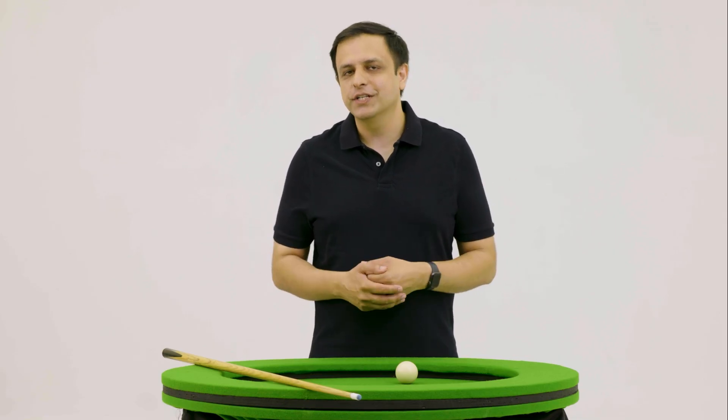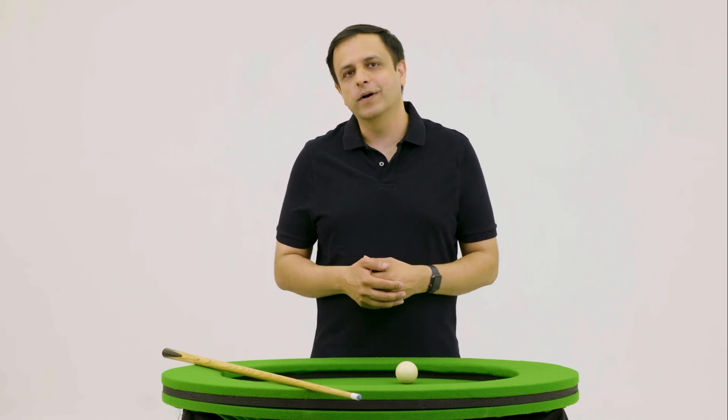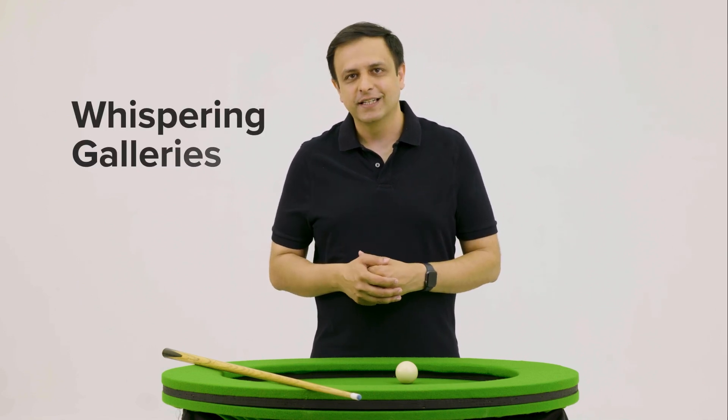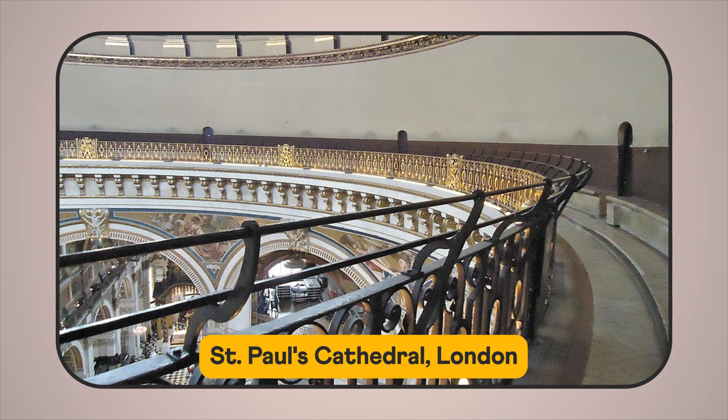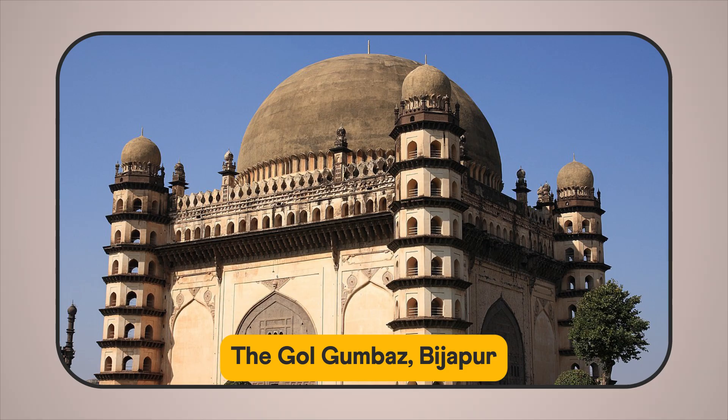Another interesting application of an ellipse's reflective property are the whispering galleries, present worldwide in locations like the Grand Central Station in New York, St. Paul's Cathedral in London, and the Gol Goombas in Bijapur, India.